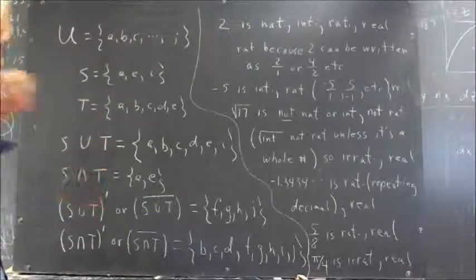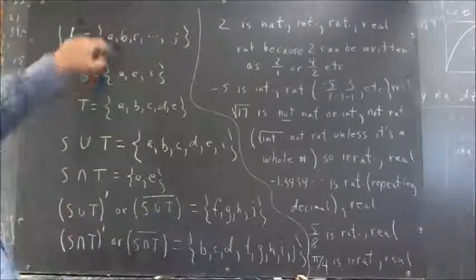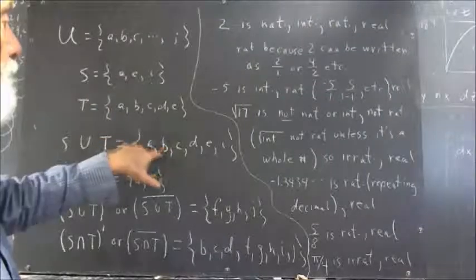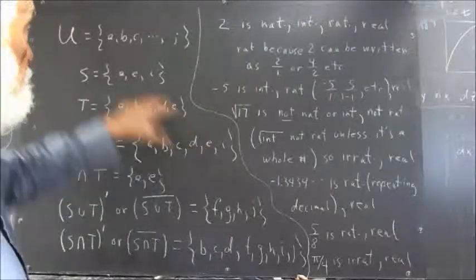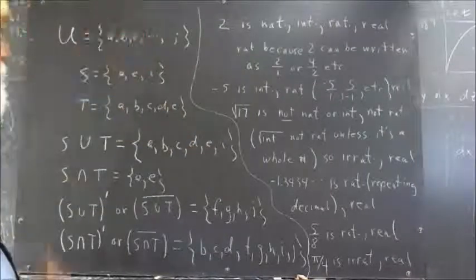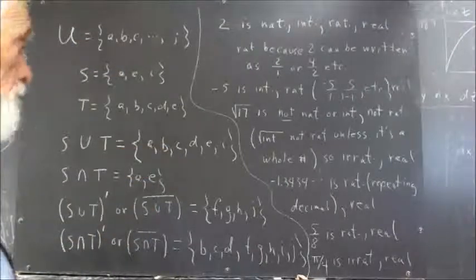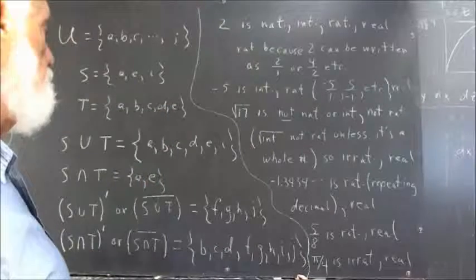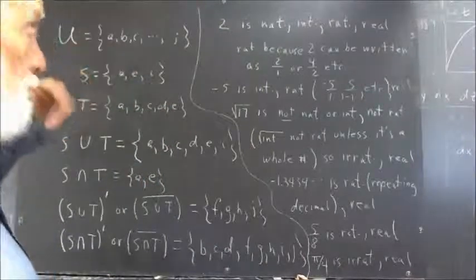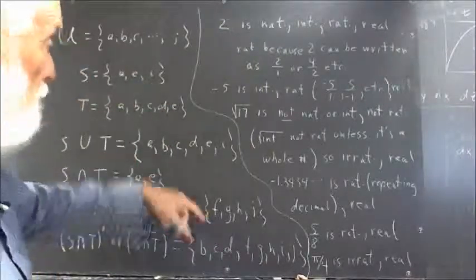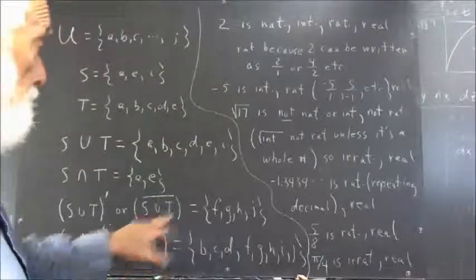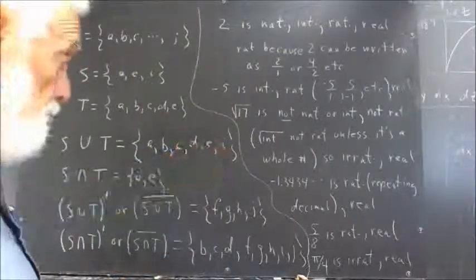A is in S union T, as is B, C, D, and E. So A, B, C, D, and E will not be in the complement because they are in the set. The next element after E that's in the universe is F, which will be in the set, then G, which will be in the complement of this set because it's not in this set.